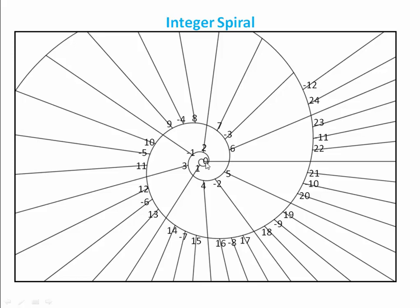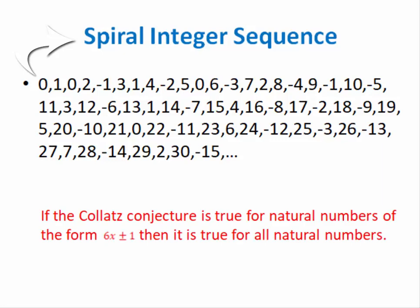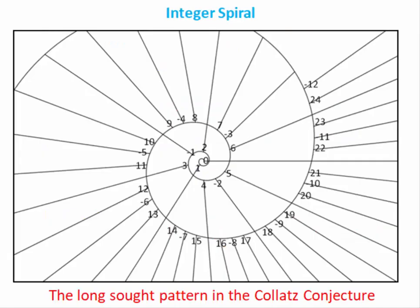So the spiral trajectory of 61 would be negative 10, 4, 6, 9, 1, and 0. The sequence on the spiral is the sequence here, which I call the spiral integer sequence. Since the spiral only deals with numbers of the form 6x plus or minus 1, it is important to point out that if the Collatz conjecture is true for natural numbers of the form 6x plus or minus 1, then it is true for all natural numbers. In other words, if we can prove that every integer on the spiral will converge to 0, then we would have proven the Collatz conjecture.